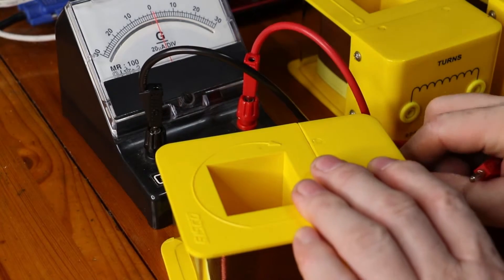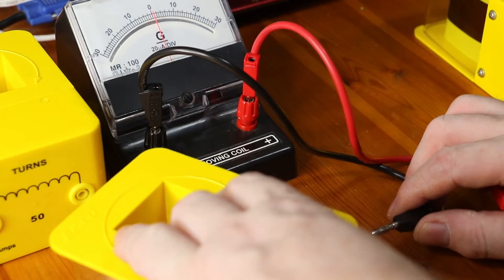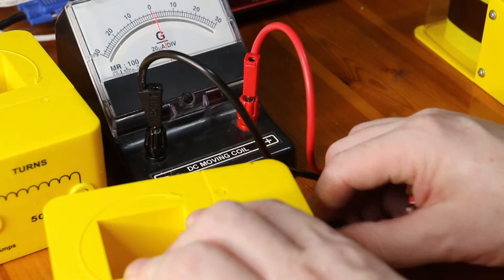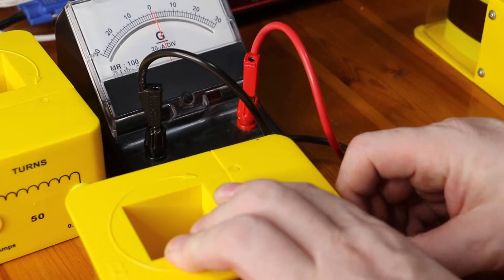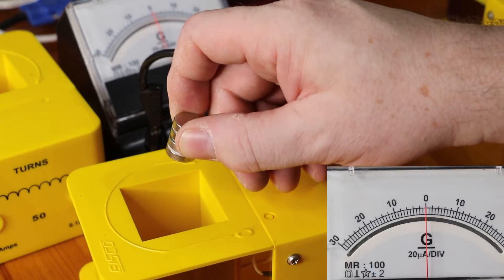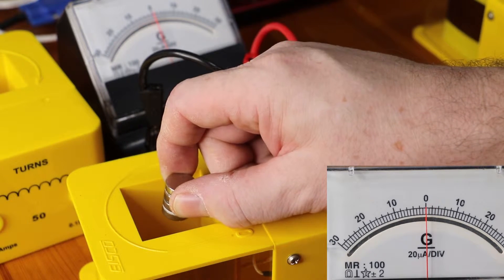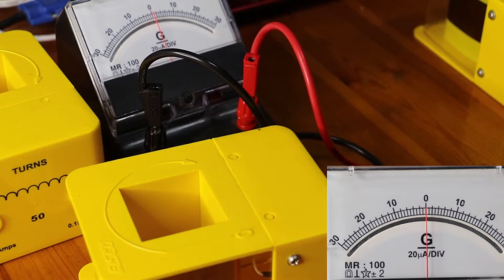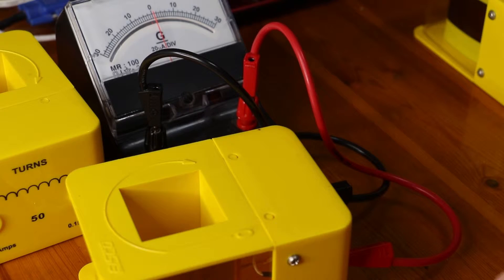Let's swap this 50-turn coil with a coil with 500 turns on it. We'll put the magnet in slowly and we get a much bigger deflection. I bring it out slowly and again I get a bigger deflection than we had with the 50 turns.